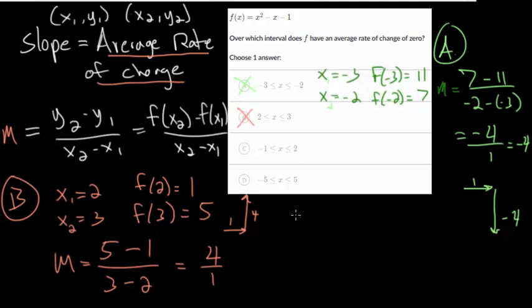Now we can try choice c here. And for that one, we've got x is minus 1 and x is 2. We plug these into our functions to find the y values. So minus 1 squared is 1, minus negative 1, so that's plus 1. So we have 1 plus 1, which is 2, minus 1, which is 1.